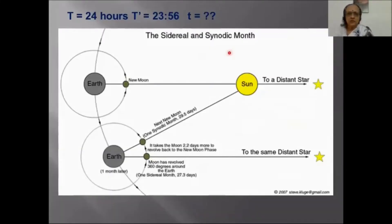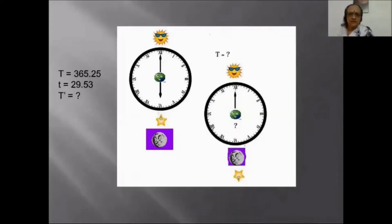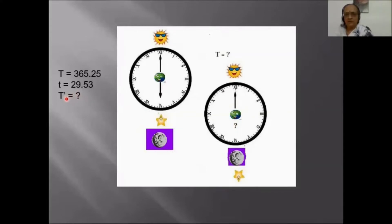The sidereal time explanation on the slide is the same concept converted into the clock analogy. For the moon, instead of a star, we now have the moon — the angle is 180 degrees for the full moon. After 29.53 days you have the overlap again, and putting that into the formula gives T-dash equal to 27.32 days, which is the sidereal orbital period of the moon.